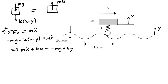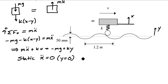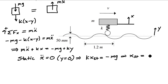I can use this to find the static displacement of the system. In the static case, I let x double-dot equal zero and also let y equal zero. That gives k times x_static equals minus mg, so x_static equals minus mg over k.